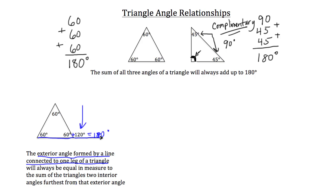Now, which are the two interior angles furthest from that exterior angle? There are only three interior angles, and the two furthest from that exterior angle are going to be this one in green and this one. You'll notice that if we add those two angles together — 60 and 60 — they add up to 120 degrees, which is the measure of that exterior angle. So the exterior angle is always equal in measure to those two interior angles furthest from it.